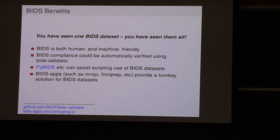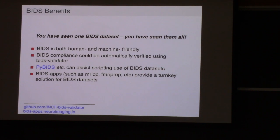I've said it before: if you've seen one BIDS dataset, you've seen them all — in the sense that you always know where things are and where to look for detail. It becomes really convenient; you don't need to struggle and contact the author asking where the stimuli file or onset is. BIDS is not only human-friendly but also machine-friendly. There are tools like PyBIDS in Python — you can say 'give me all anatomicals' and get a list of files for all subjects. There are also BIDS apps — applications that understand BIDS layout and do the rest for you.